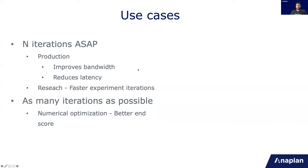So why is it good? First in production, you need to do an iteration as fast as possible. And it improves bandwidth of the product and it also reduces latency. So if you need to do something really fast, the process has to be fast.